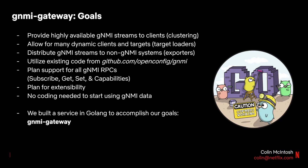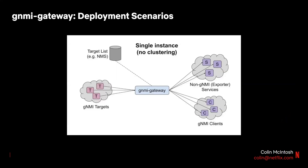While we understand that not everyone builds their tooling infrastructure the same as us, we wanted to provide flexibility by enabling a few different deployment scenarios. Starting with the simplest: a single instance of GNMI Gateway with no clustering enabled. This is useful for testing or for situations where high availability isn't required. Here, a single instance uses a target loader to pull in a list of targets to connect to, and GNMI Gateway makes all of the connections to the GNMI targets on the left-hand side of the diagram.